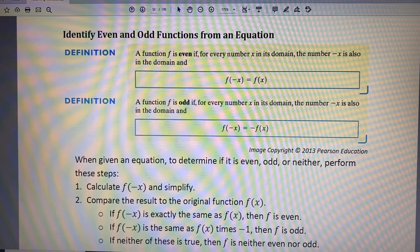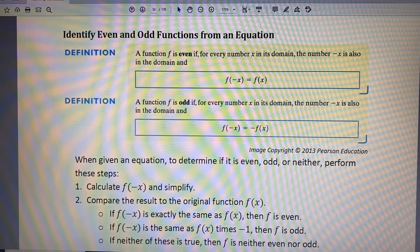The topic of this video is identifying even and odd functions from an equation. A function f is even if, for every number x in its domain, the number negative x is also in the domain, and f of negative x equals f of x.